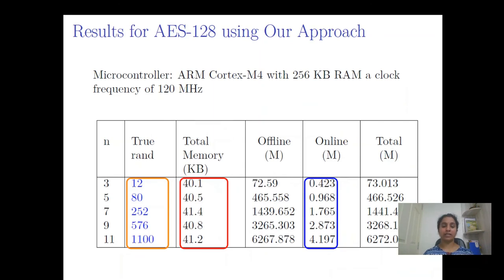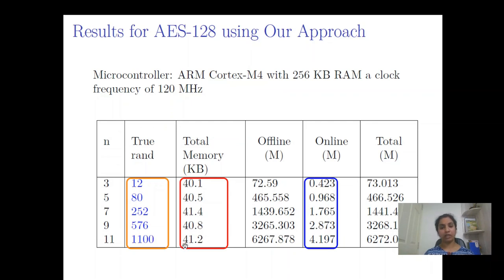This slide presents the experimental results of our schemes using the multi-PRG approach. To demonstrate a 10th-order lookup table-based scheme on a resource-constrained device, we chose an ARM Cortex-M4 device with 256 KB of memory. For a 10th-order secure AES-128 implementation, we need 41.2 KB of memory — including preprocessed lookup tables plus the input seed to the PRG — and the online execution requires around 4 million clock cycles.